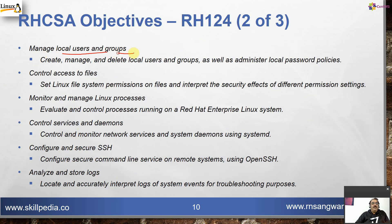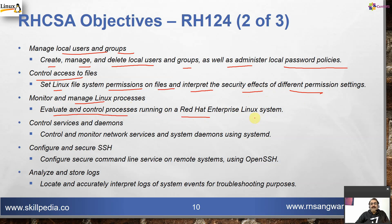Sixth: manage local users and groups — create, manage, and delete local users and groups, and administer local password policies. Seventh: control access to files — set Linux file system permissions on files and interpret the security effects of different permission settings. Eighth: monitor and manage Linux processes — evaluate and control processes running on a Red Hat Enterprise Linux system. Ninth: control services and daemons — control and monitor network services and system daemons using systemd. Tenth: configure and secure SSH — configure secure command-line services on remote systems using OpenSSH.